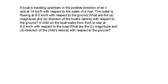Hello everyone. Here is a question from Resnick Halliday, 10th edition, chapter 4, question number 17. The question reads: a boat is travelling upstream in the positive direction of an x-axis at 14 km per hour with respect to the water of a river. The water is flowing at 9 km per hour with respect to the ground. What are the magnitude and direction of the boat's velocity with respect to the ground? A child on the boat walks from front to rear at 6 km per hour with respect to the boat. What are the magnitude and direction of the child's velocity with respect to the ground?